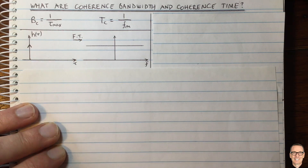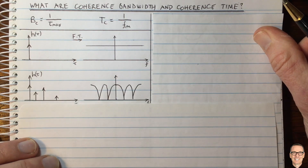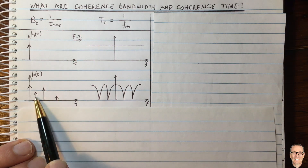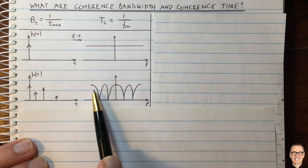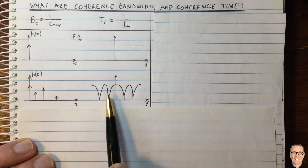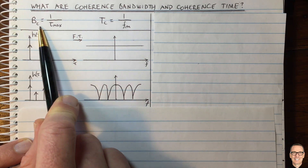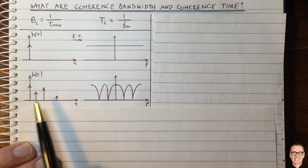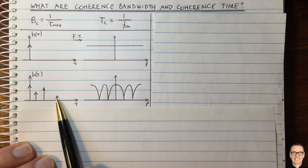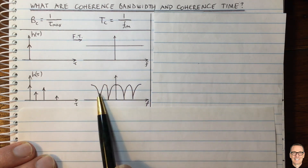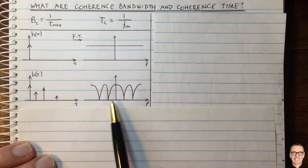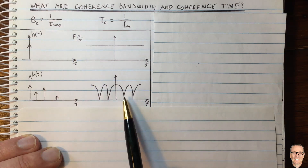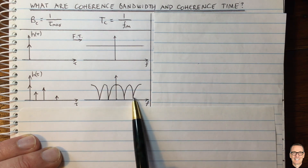Let's think about if you've got multiple delay paths. Here's an example where there are multiple paths in the wireless channel with different delays τ. In the frequency domain, the Fourier transform would look something more like this. Here's the equation for the coherence bandwidth in terms of the inverse of the maximum delay τ_max. It's common to get tricked into thinking that this is some definition of the frequency distance between these spikes.